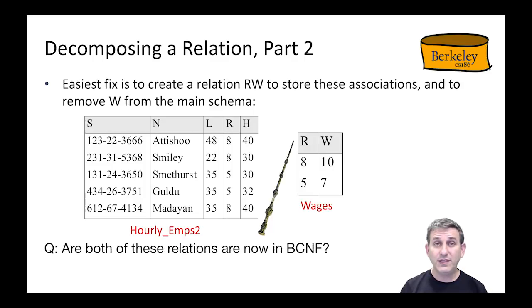So are both of these relations in BCNF? The answer is yes. On the left-hand side, we have S determines SNLRH - S is a super key of the left-hand side, and that satisfies BCNF. And on the right-hand side, R determines W also satisfies BCNF. So both of those relations appear to be in BCNF.